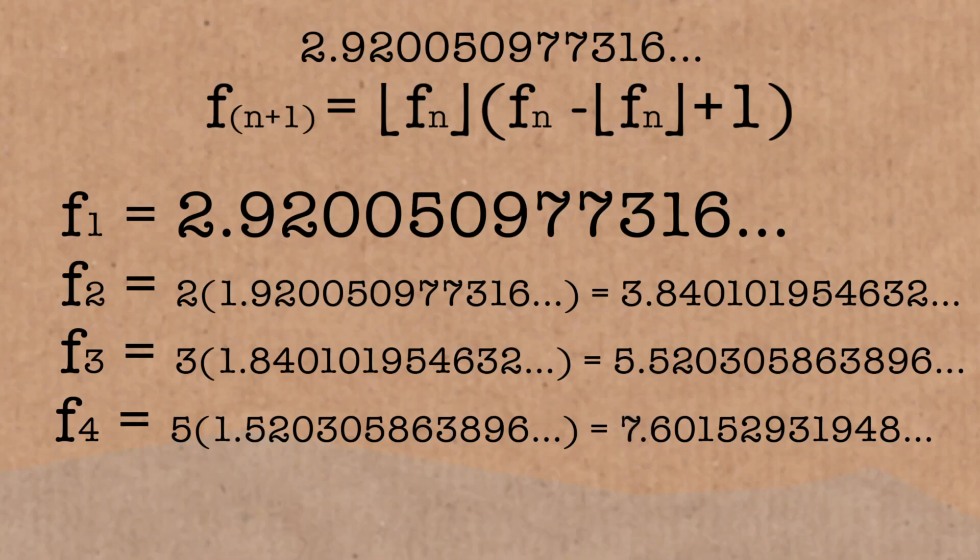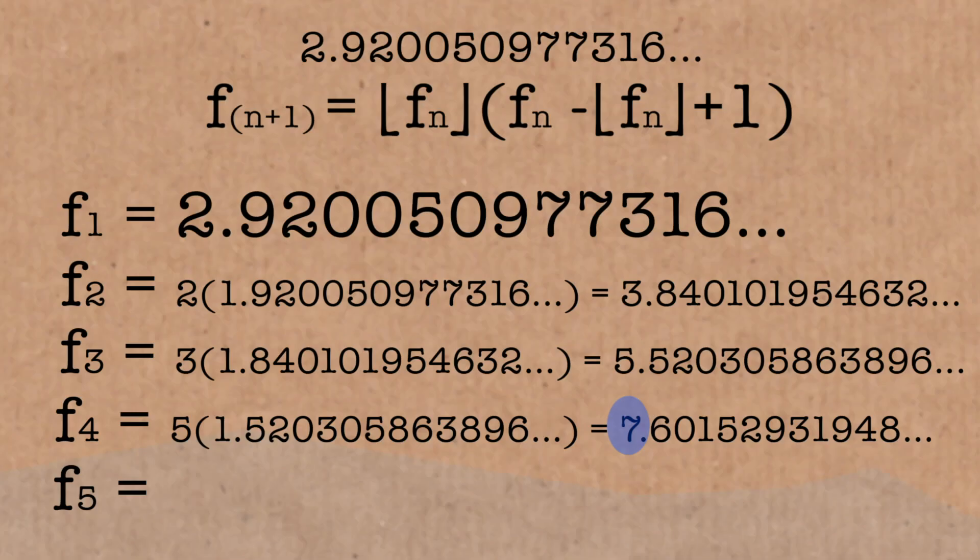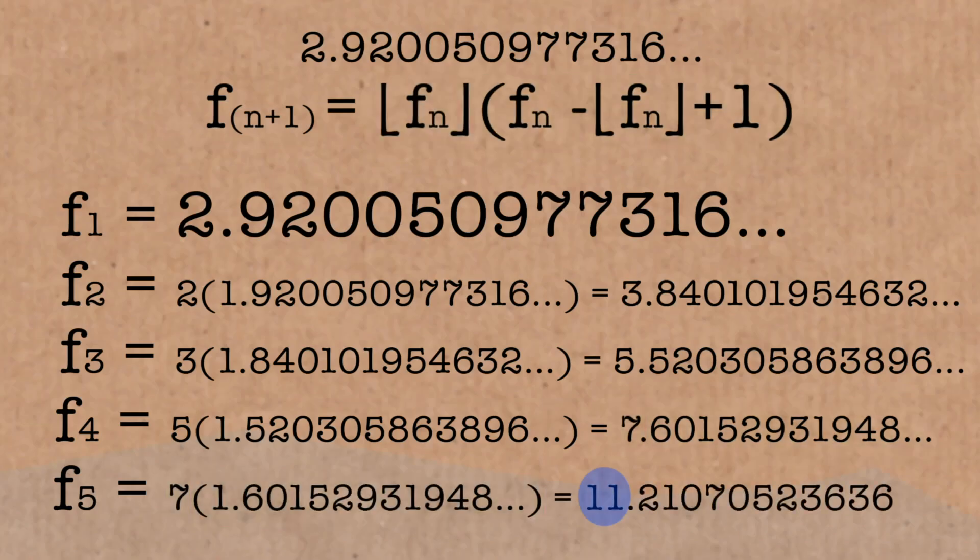One more, or are you satisfied? Do you believe me? Oh, let's do another one. Okay, so what do we want the next one to be? So we've got three, five, seven... Eleven. It should be eleven, okay. So we take our previous one, which is a seven, one plus junk, and if you do your calculation, yes, eleven, point, two, one, zero, seven, oh, five, and stuff.